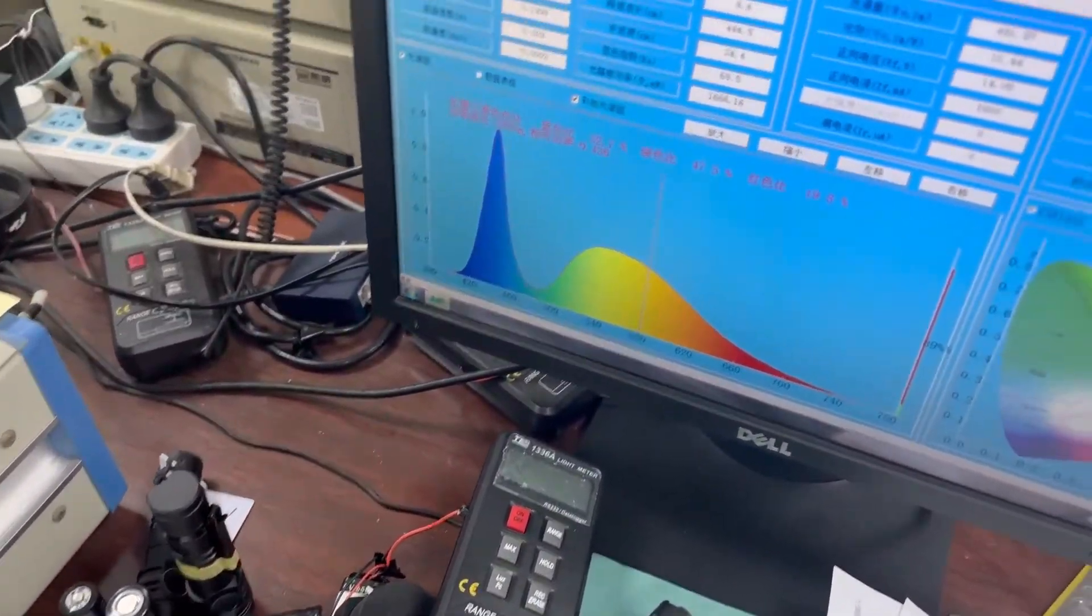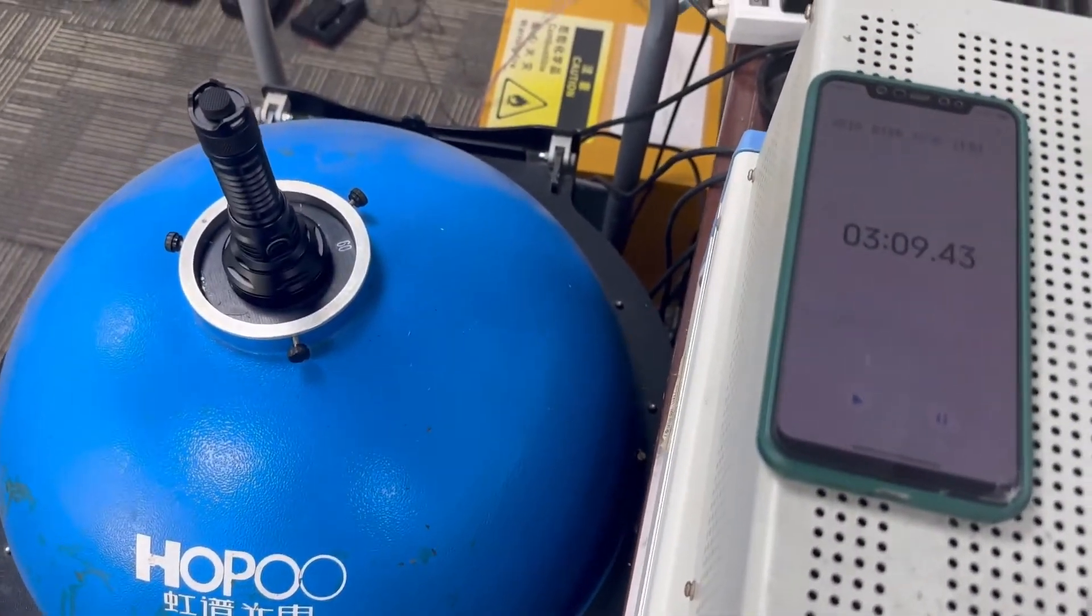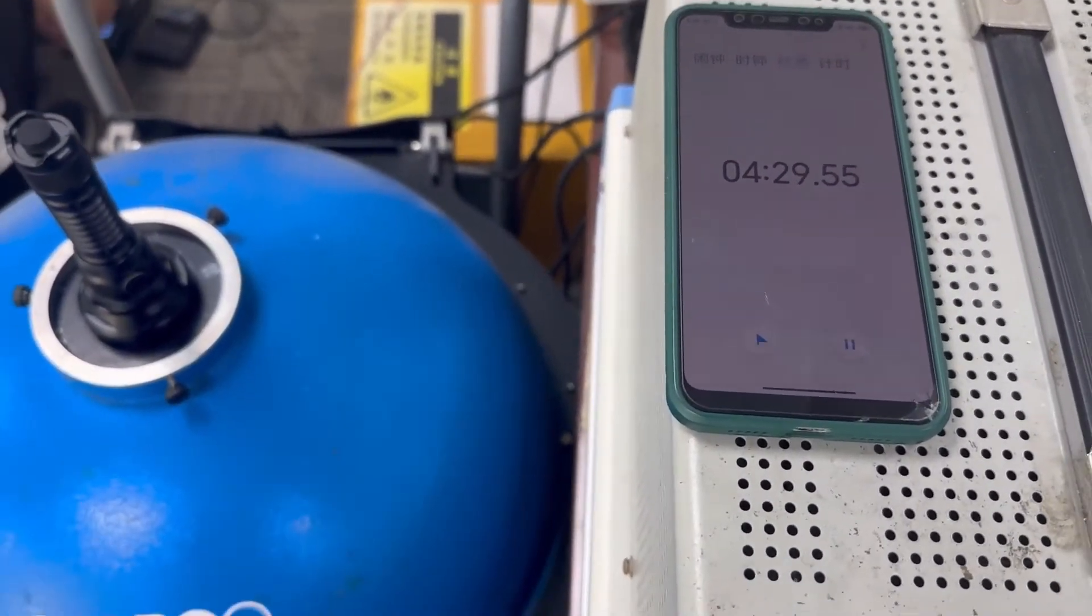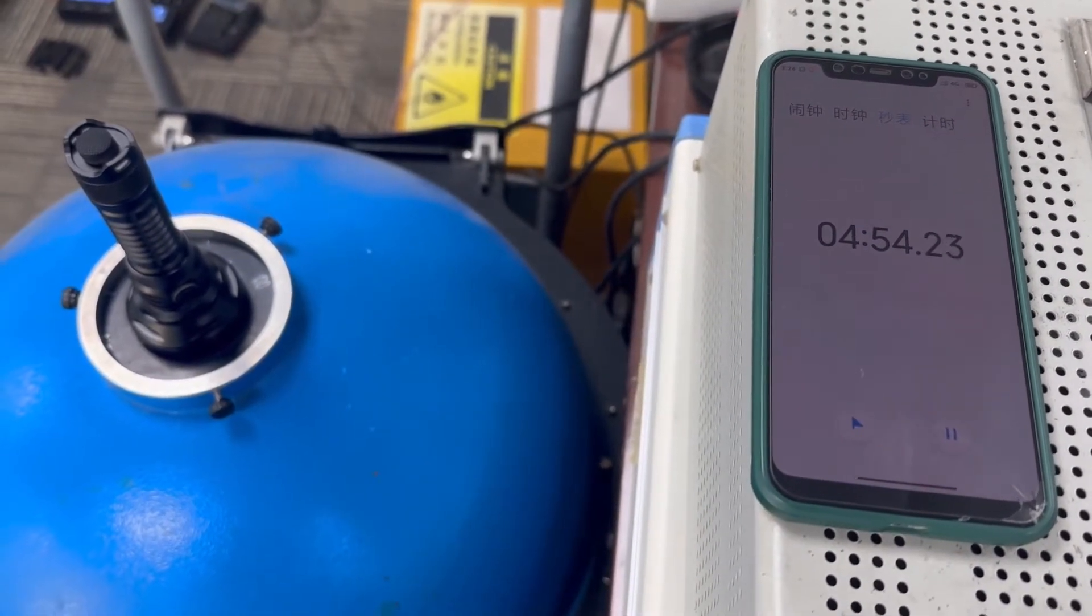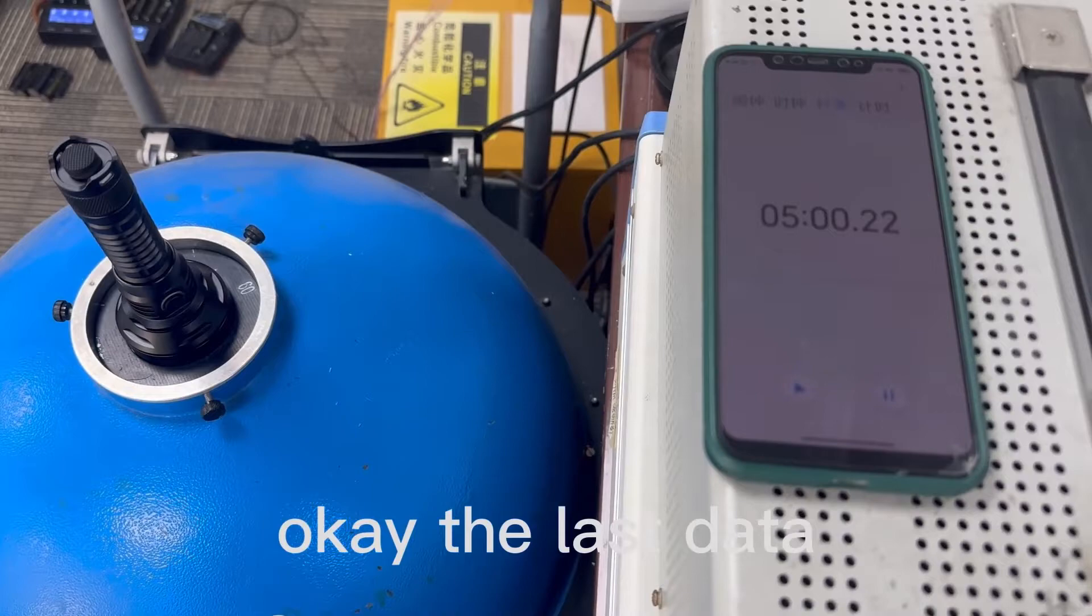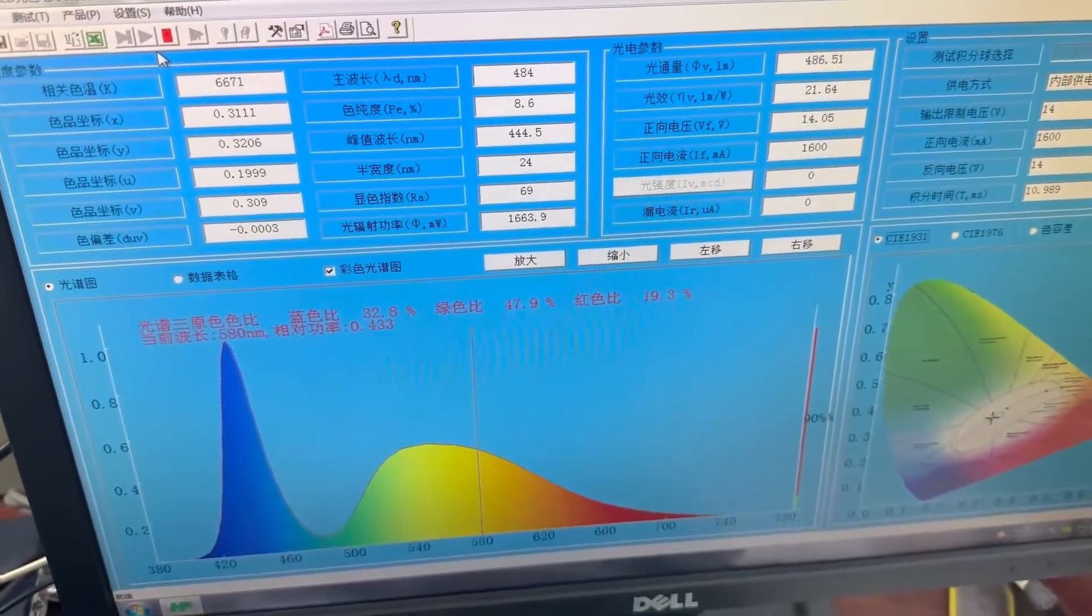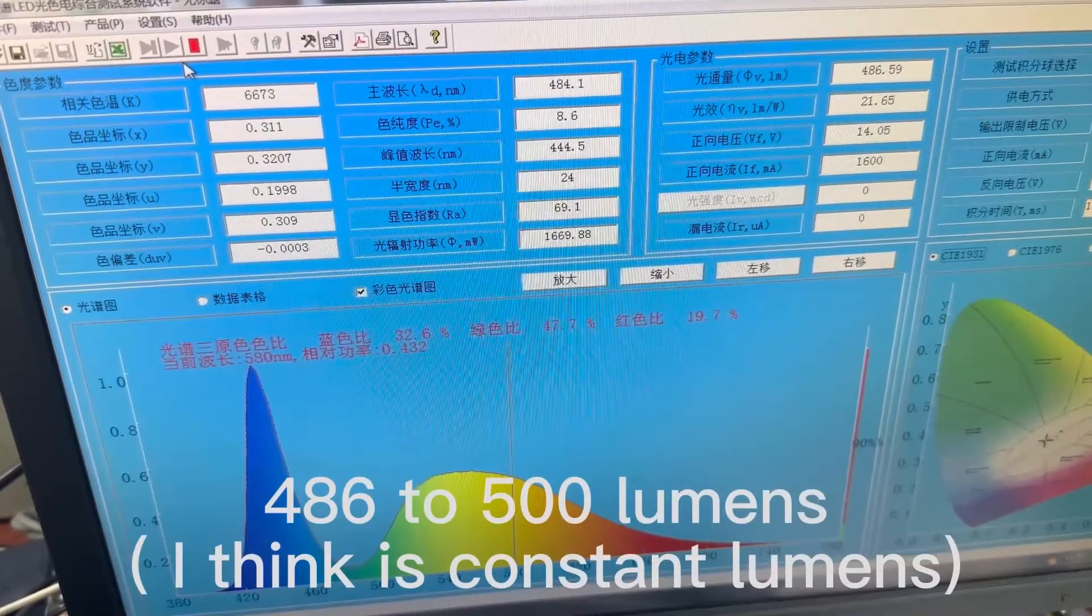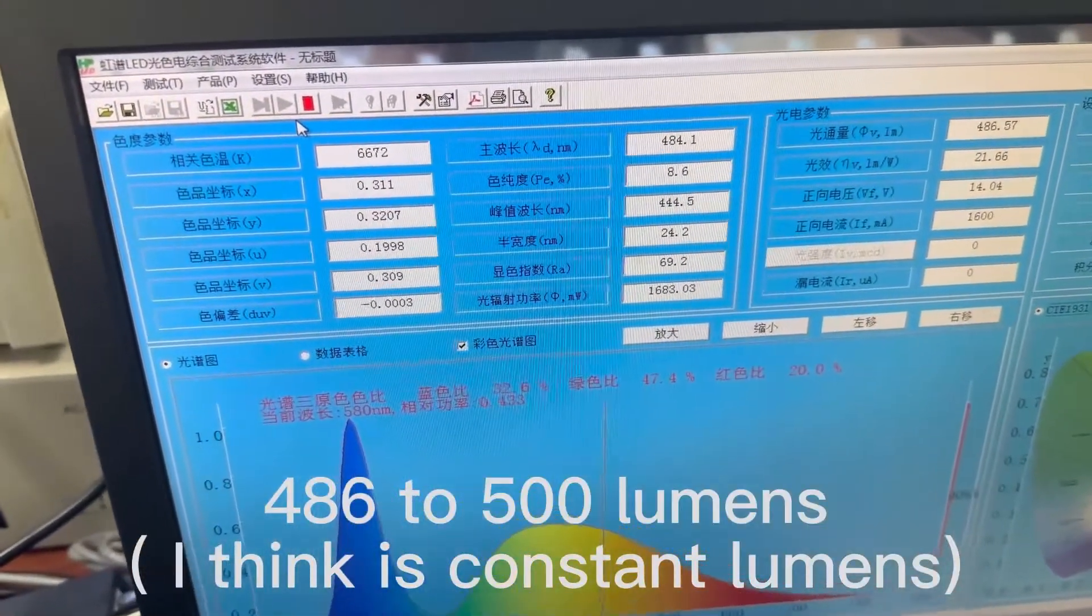What happened? It's 3 minutes. Okay, once again. Okay, the last 10 seconds. 5, 4, 3, 2, 1. Okay, the last data is we can see is 486 to 500 lumens. I think it's constant lumens, would be 500 lumens.